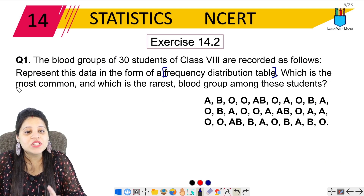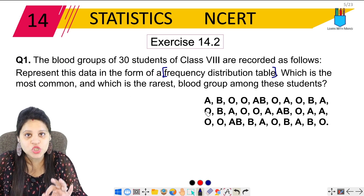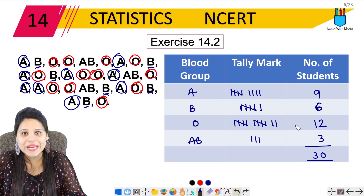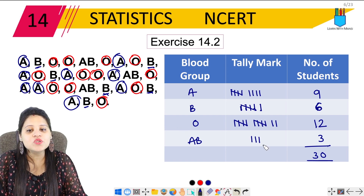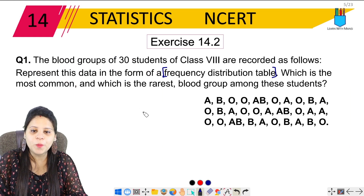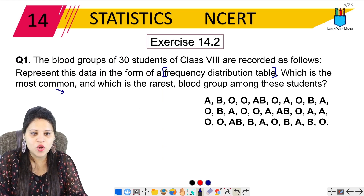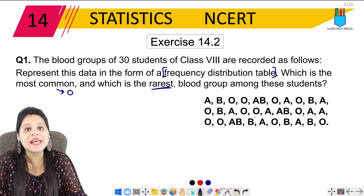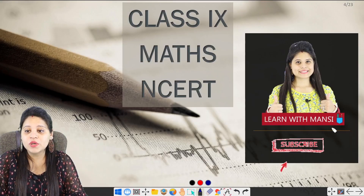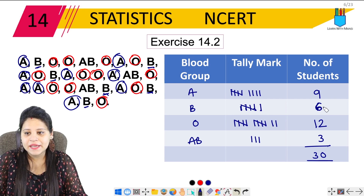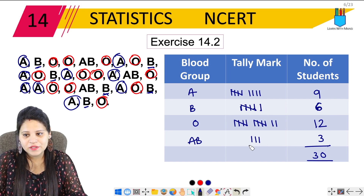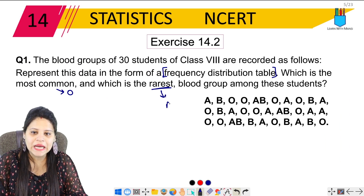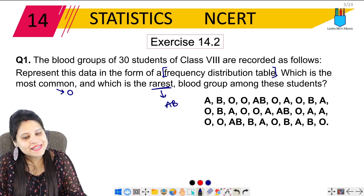Now we come to the question: which is the most common blood group? Most common means where the most students are. Looking at the table, blood group O has the highest count, so the most common is blood group O. And which is the rarest? Rarest means the least — the lowest count is 3, which is AB. So the rarest blood group is AB.